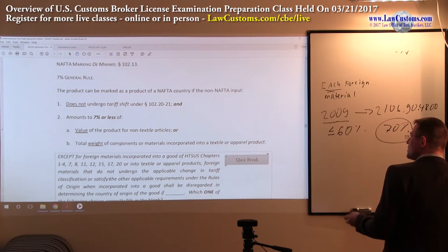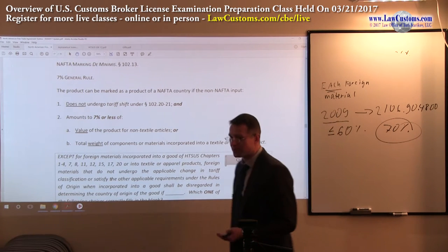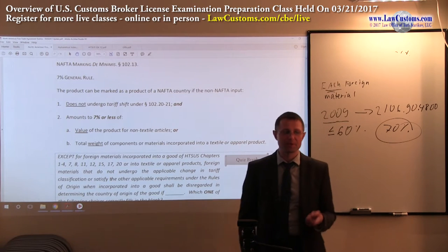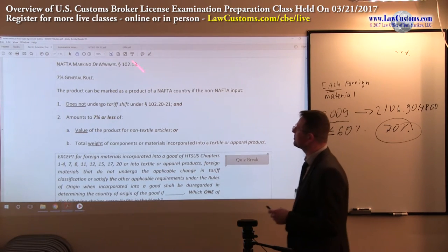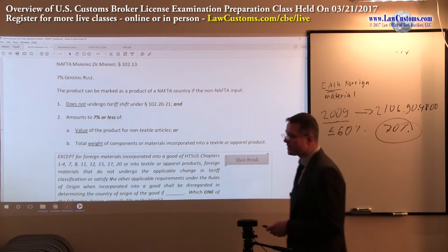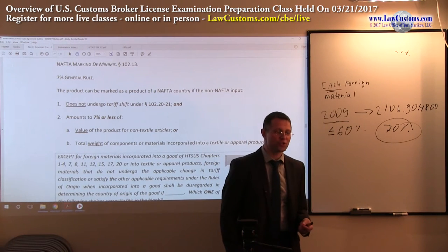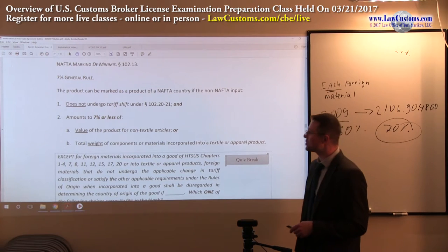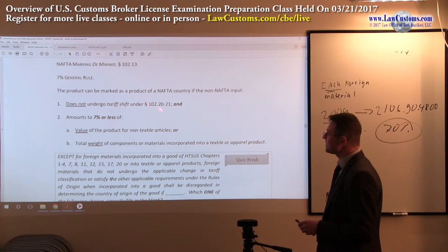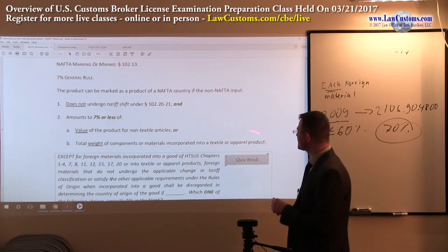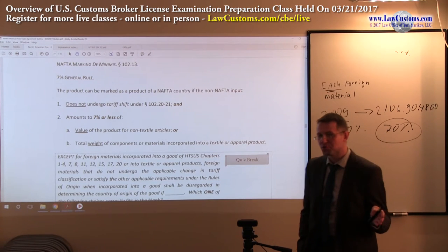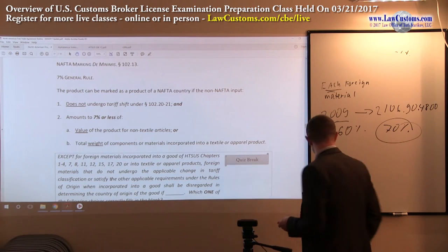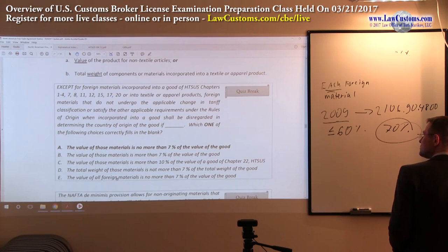Just like the de minimis rules of origin under General Note 12 HTSUS for NAFTA, NAFTA marking also has de minimis definitions, and they are available under 102.13. Just like under General Note 12 HTSUS, you also see the 7% rule. That 7% rule is applicable to value if it is non-textiles, and to weight if it is a textile or apparel product. So your knowledge from General Note 12 is almost portable into the NAFTA marking rules.